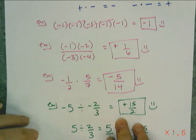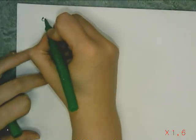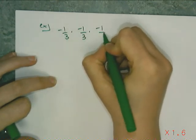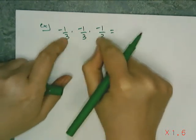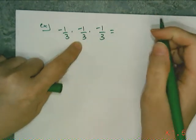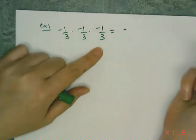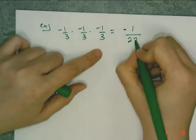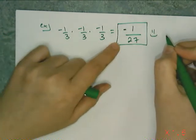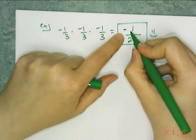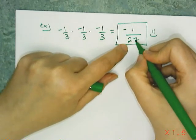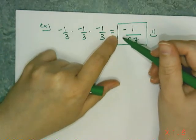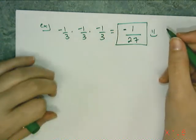I can also look at whole strings of fraction multiplications. If I have negative 1 third times negative 1 third times negative 1 third, I can tell the sign from the very beginning: 3 negatives, 2 of them cancel out to make a positive, so my final answer is going to be negative. Then 1 times 1 times 1 is 1, and 3 times 3 times 3 is 27, giving me negative 1 twenty-seventh. As a note, I can put the negative sign in the numerator or out front — rarely in the denominator, that just looks weird. The standard is numerator or out front.